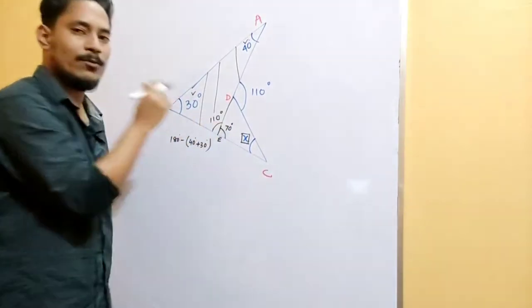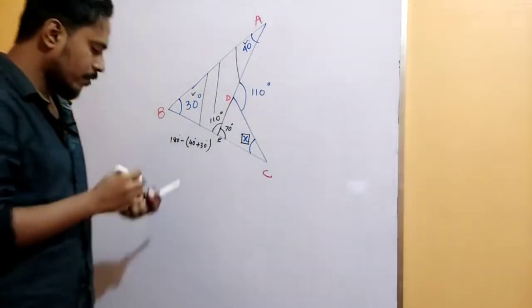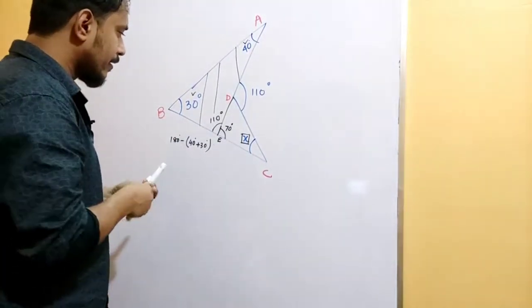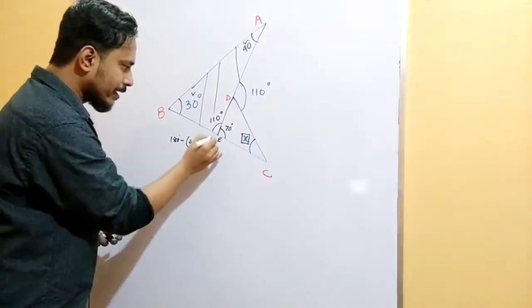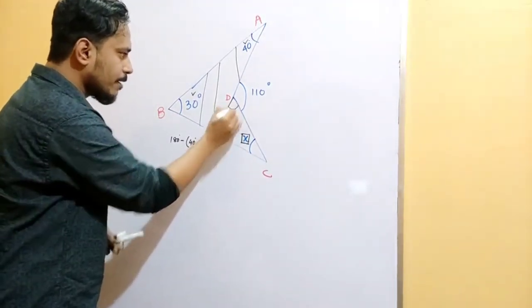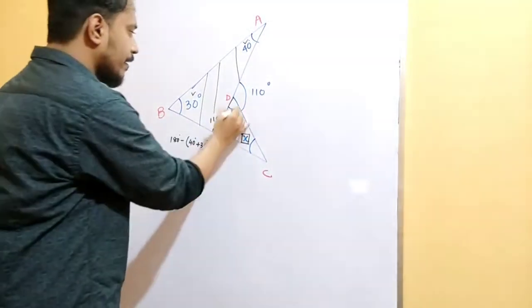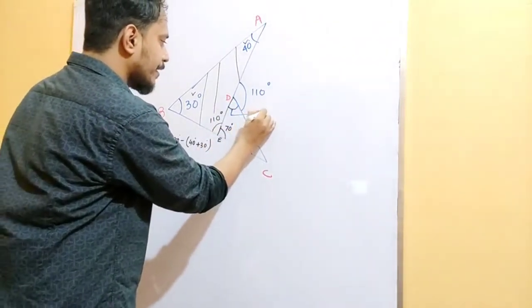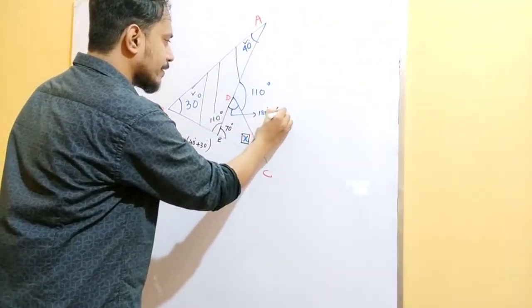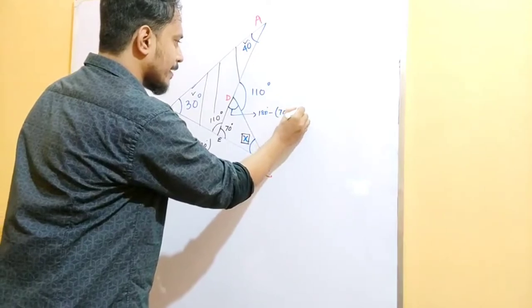This angle is 180 degree. Now, in triangle BC, this angle is 180 minus 70 plus X.